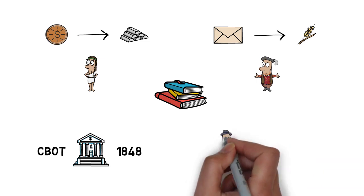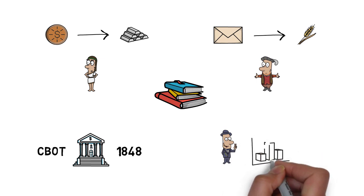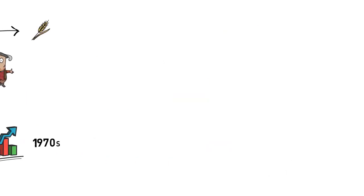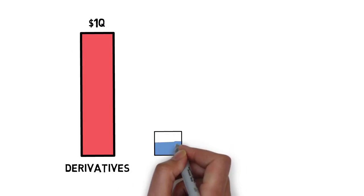When it comes to more modern times, derivatives have been one of the major forces that drive the whole financial industry forward since the 1970s. The total market size of all derivatives is estimated to be as high as $1 quadrillion, which completely dwarfs any other market including the stock or bond markets.